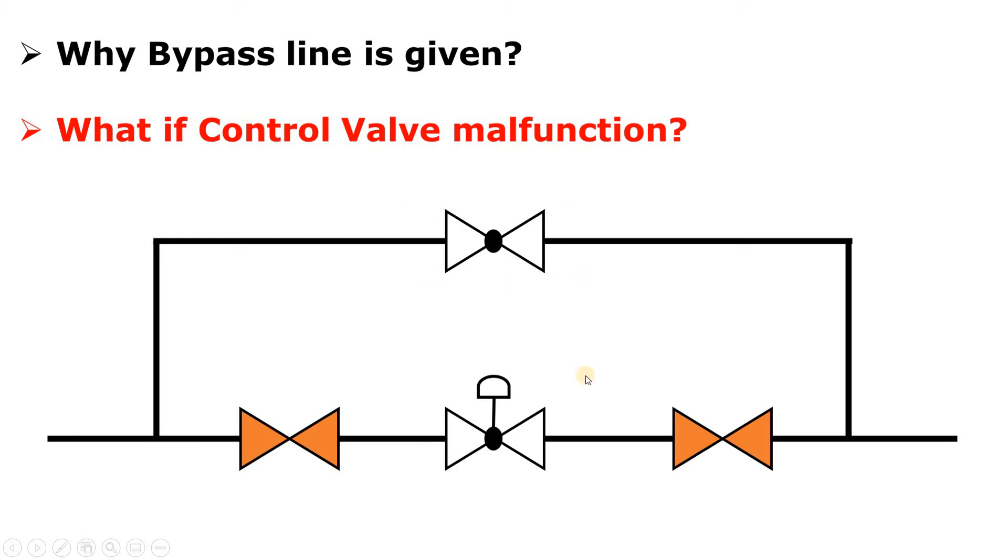So here we are using the globe valve because we want to regulate the flow. On the basis of the requirement, we will open this globe valve and we will do our maintenance here. And till then, this bypass valve will be open and my solution will go from here. Got my point?